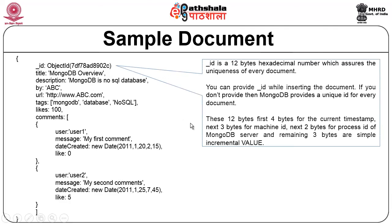The object ID is a 12-byte hexadecimal number which makes every document unique. When you create a document, you can provide your own document ID while inserting; else MongoDB itself will provide a unique ID. The 12 bytes break down as follows: the first 4 bytes indicate the current timestamp, the next 3 bytes indicate the machine ID, the next 2 bytes indicate the process ID of the MongoDB server, and the last 3 bytes are a simple incremental value — this combination makes the document ID unique.